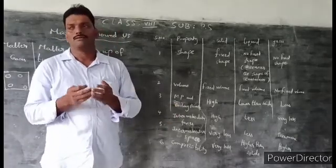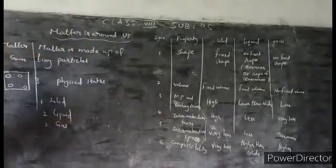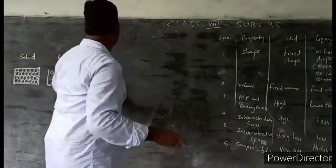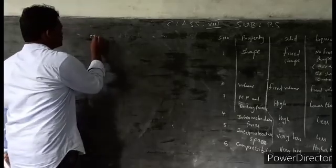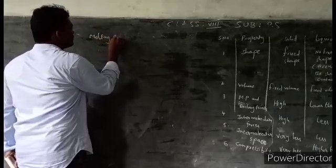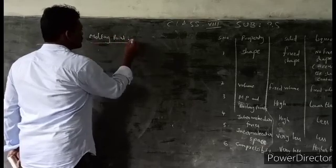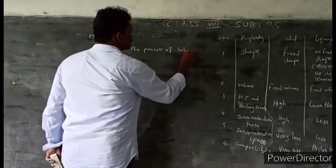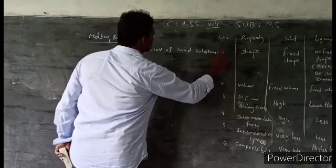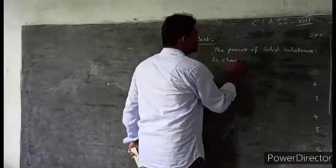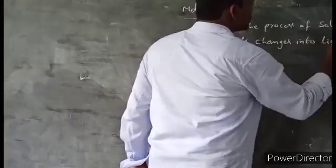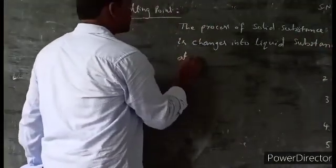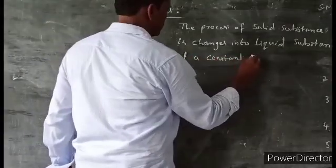What is the definition of melting point? The melting point is the process by which a solid substance changes into a liquid substance at a constant temperature. The temperature at which this change happens is called the melting point.